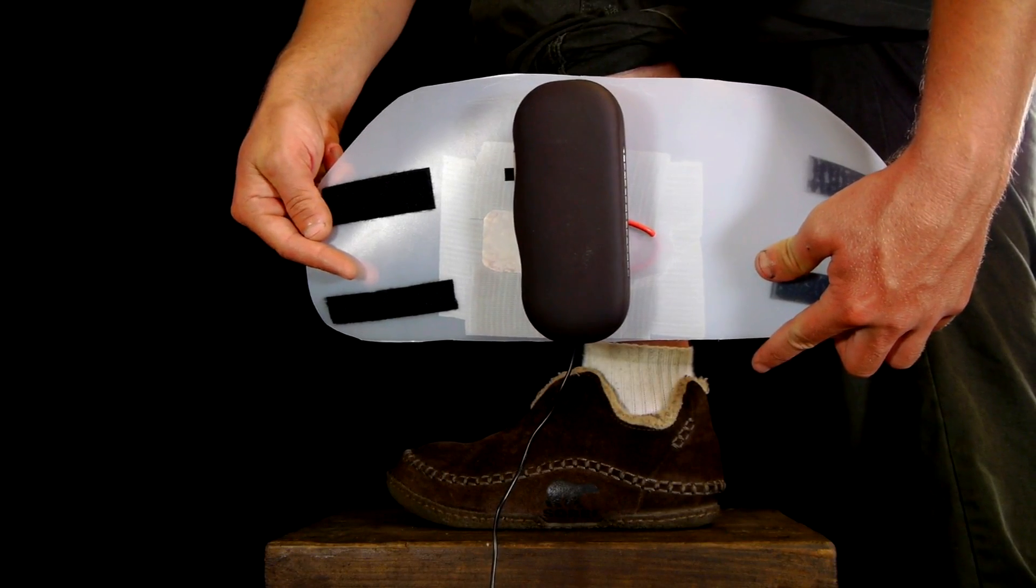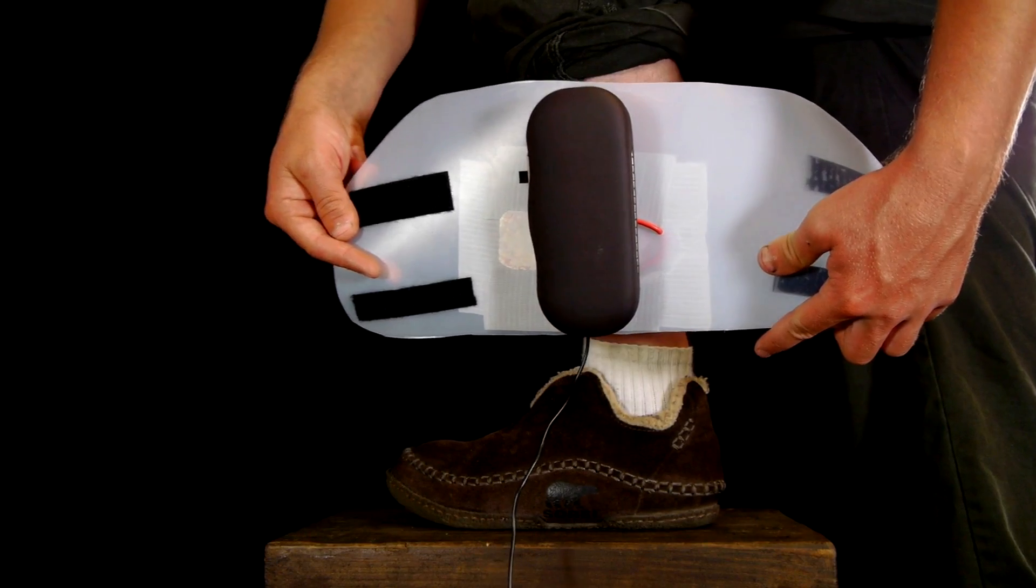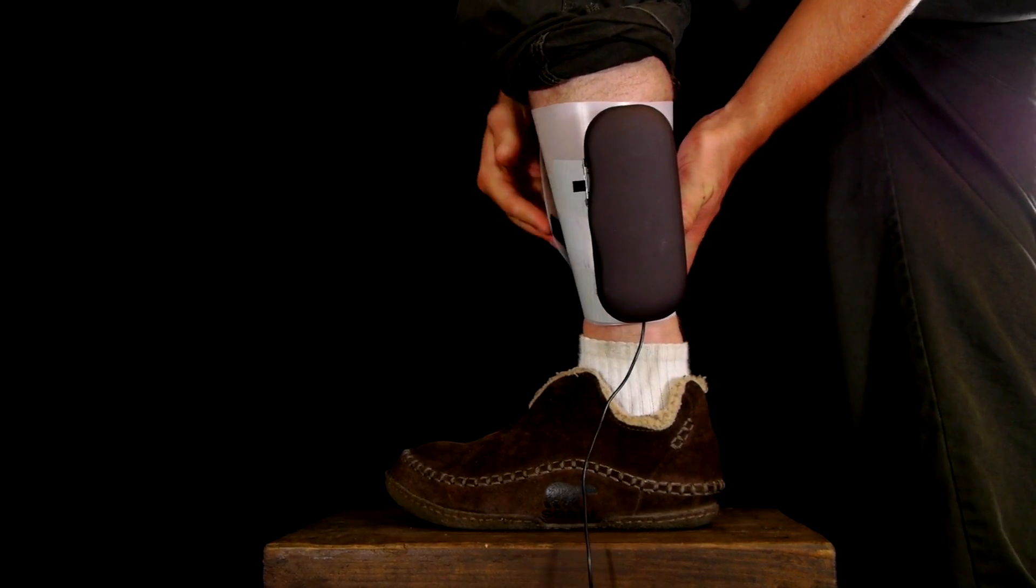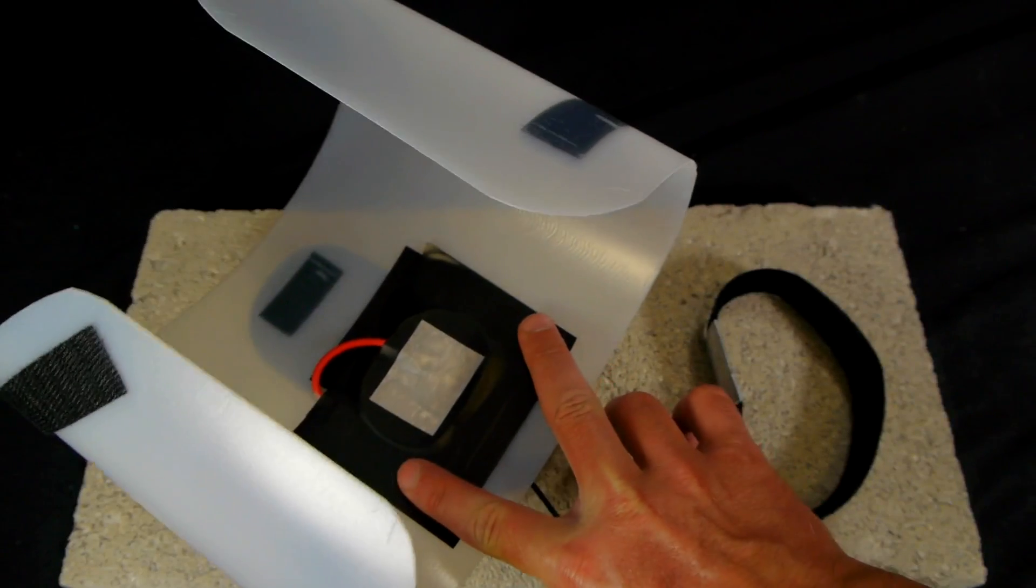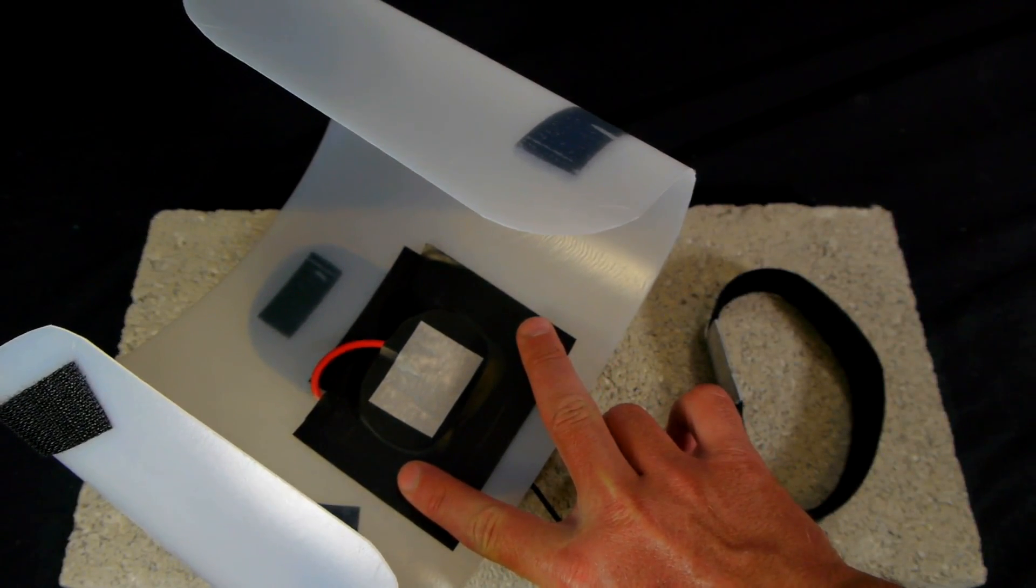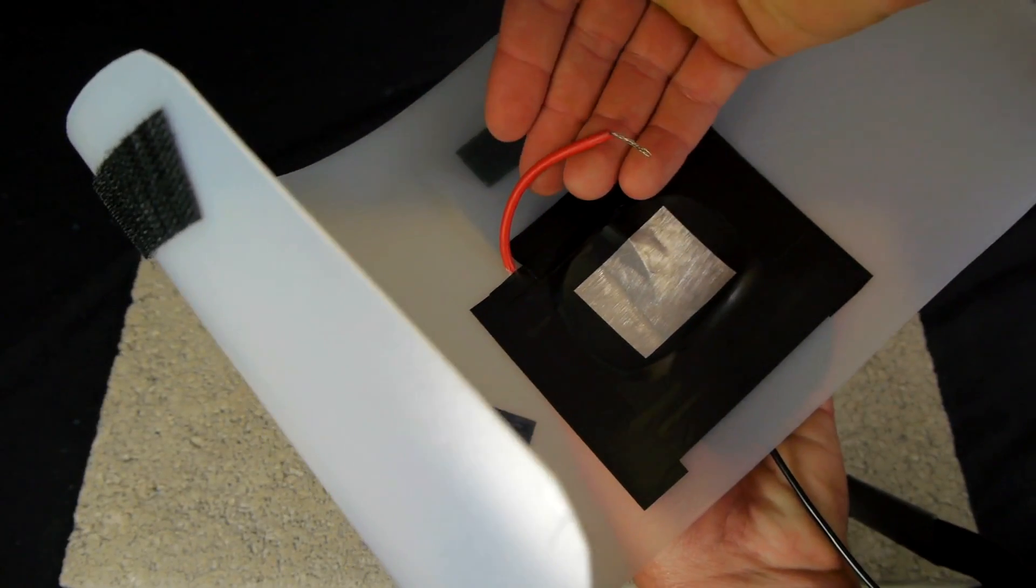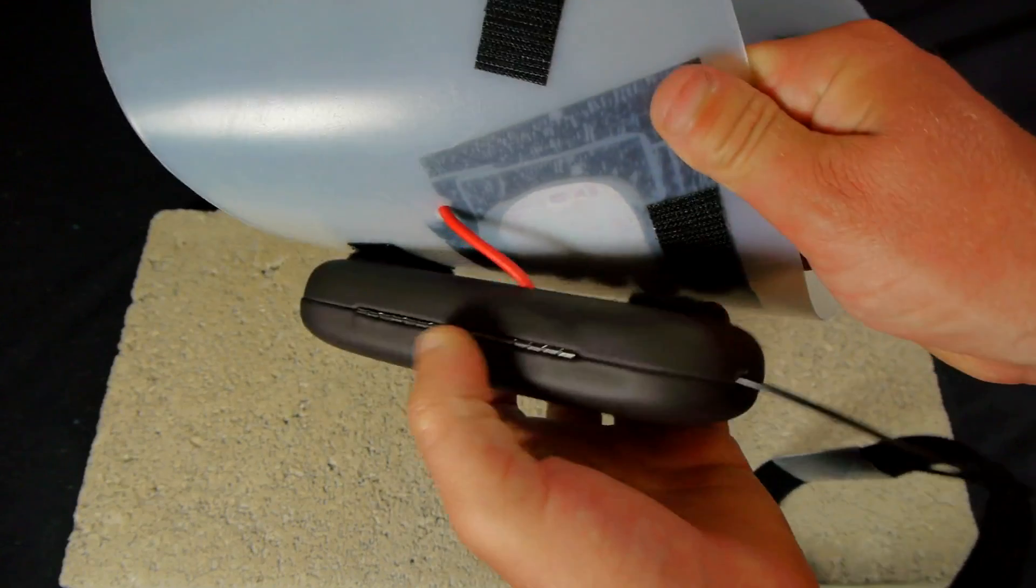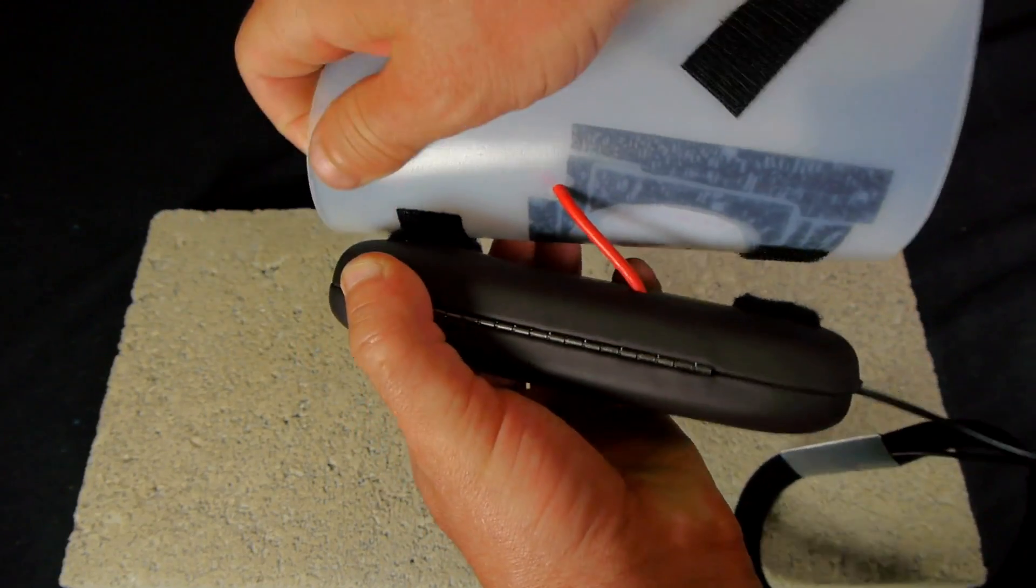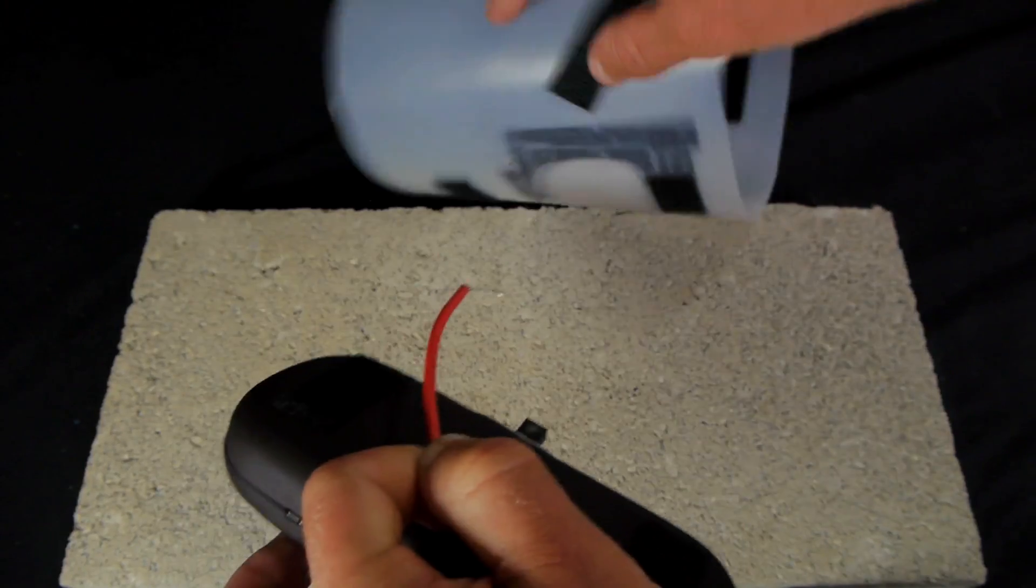We can now begin work on the leg harness for this device. On closer inspection we can see that the harness's primary purpose is to bring the red wire coming off of our device into good electrical contact with the side of the user's leg. The case full of our electronics is simply velcroed to the outside of the sleeve for easy removal and adjustment.